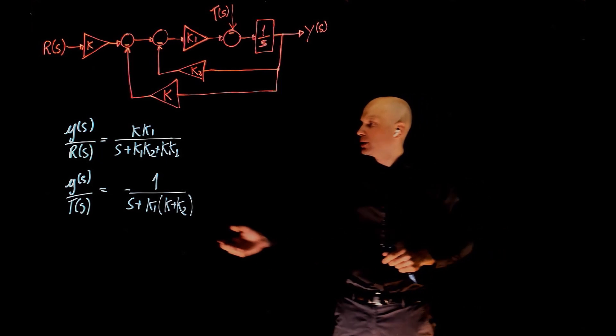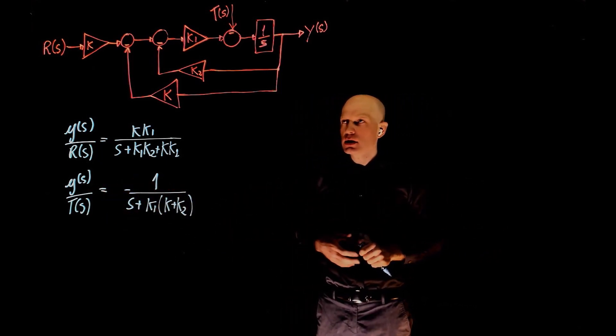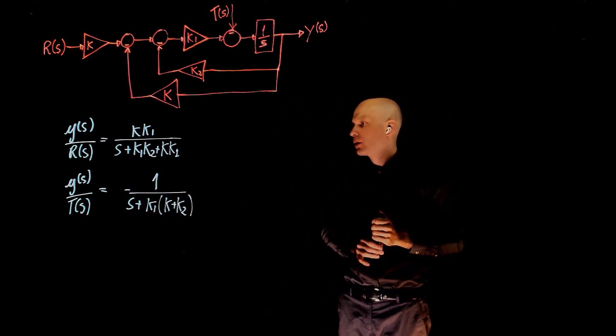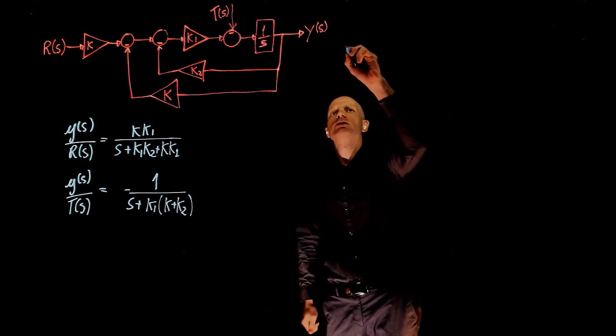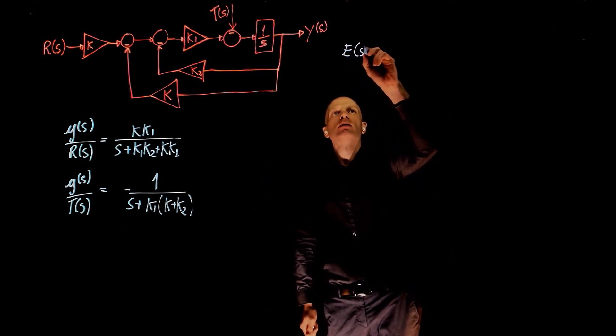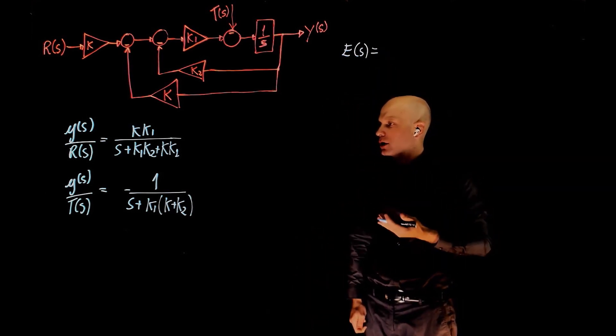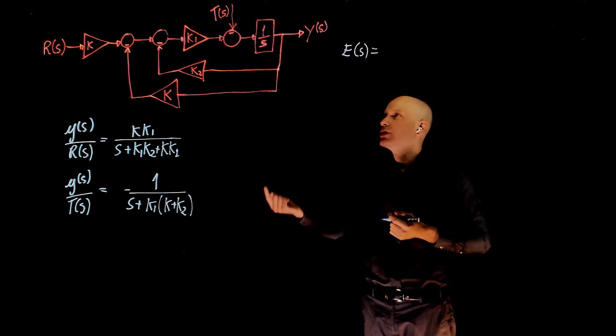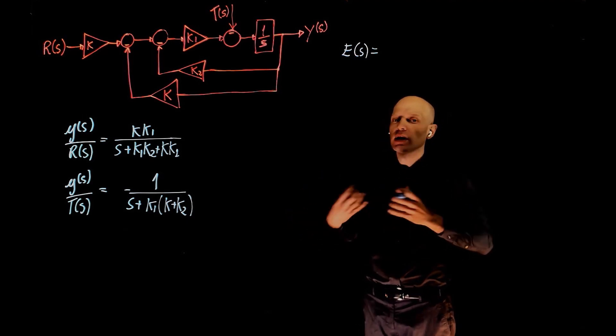Now that we have the transfer function between the disturbance and the output, we can calculate the state error when the step input of t of s is applied to the system. The steady state error to an input disturbance is the desired output minus the actual output. Remember that we set r to 0, and now anything that deviates from 0 is an error.